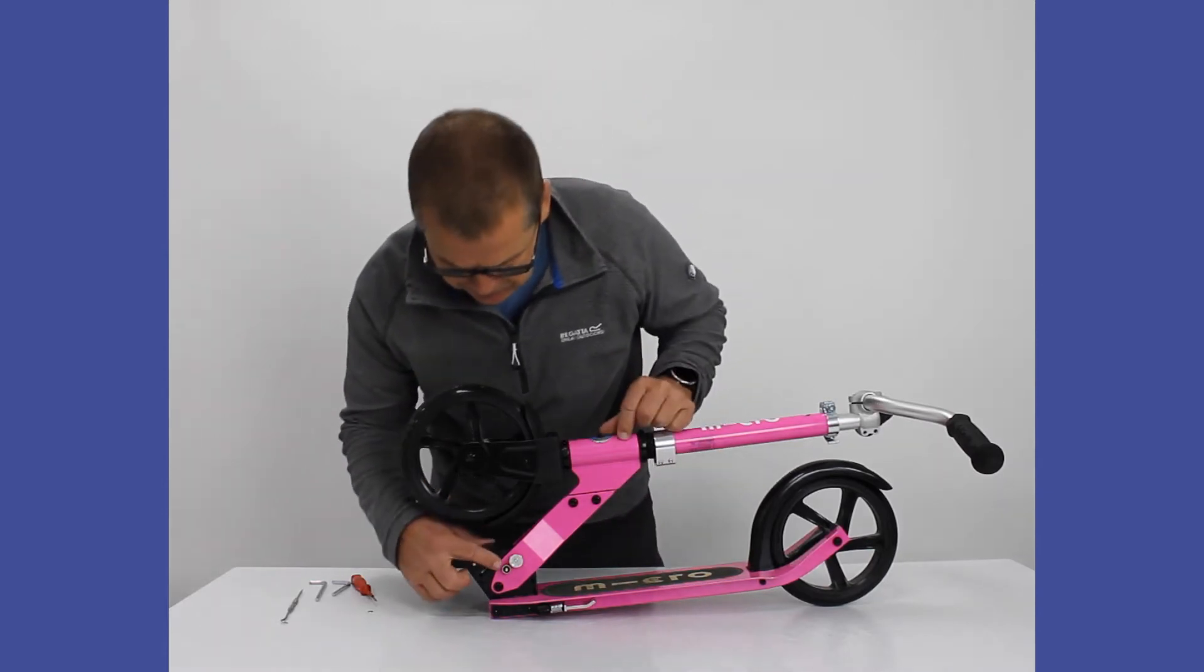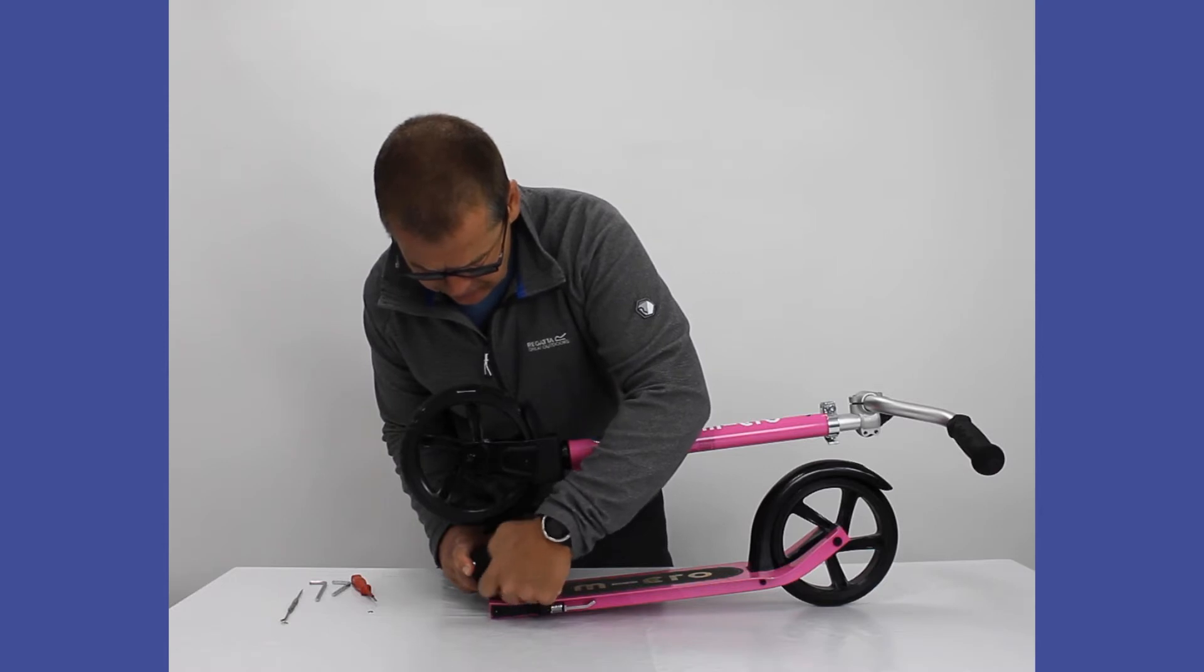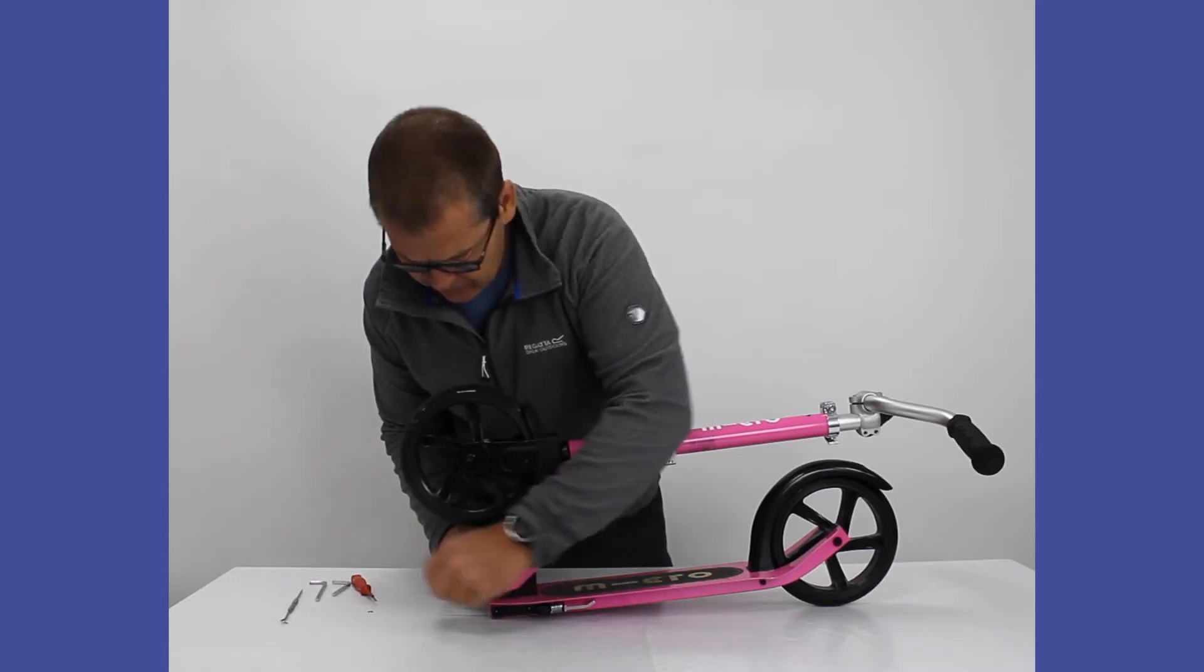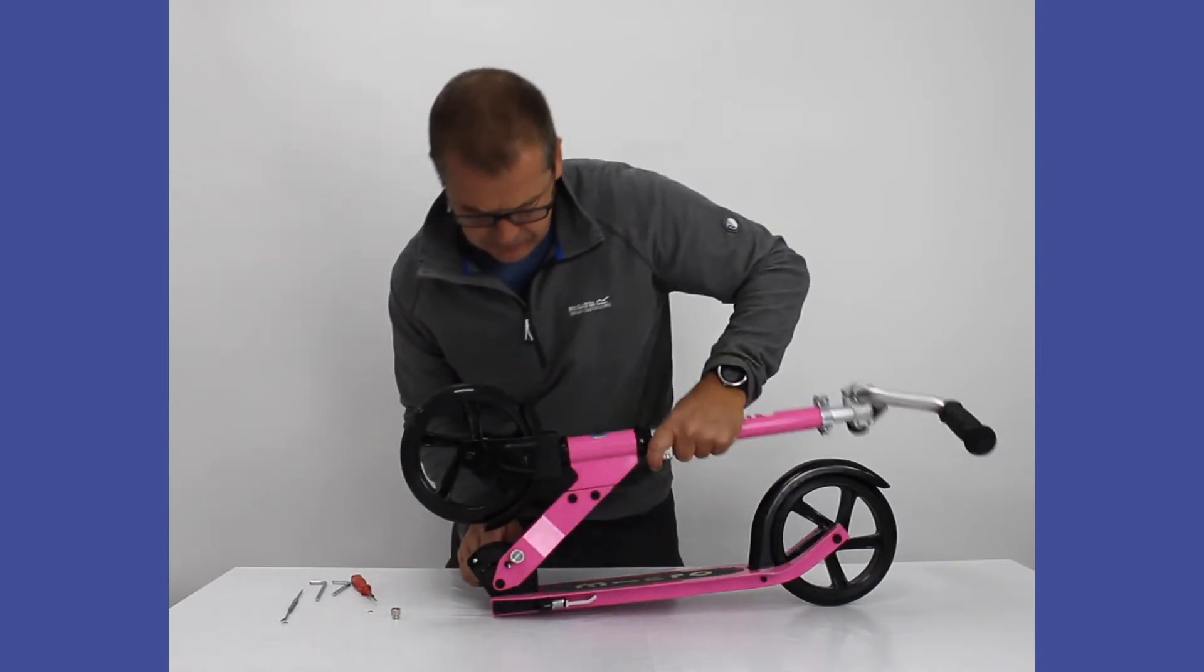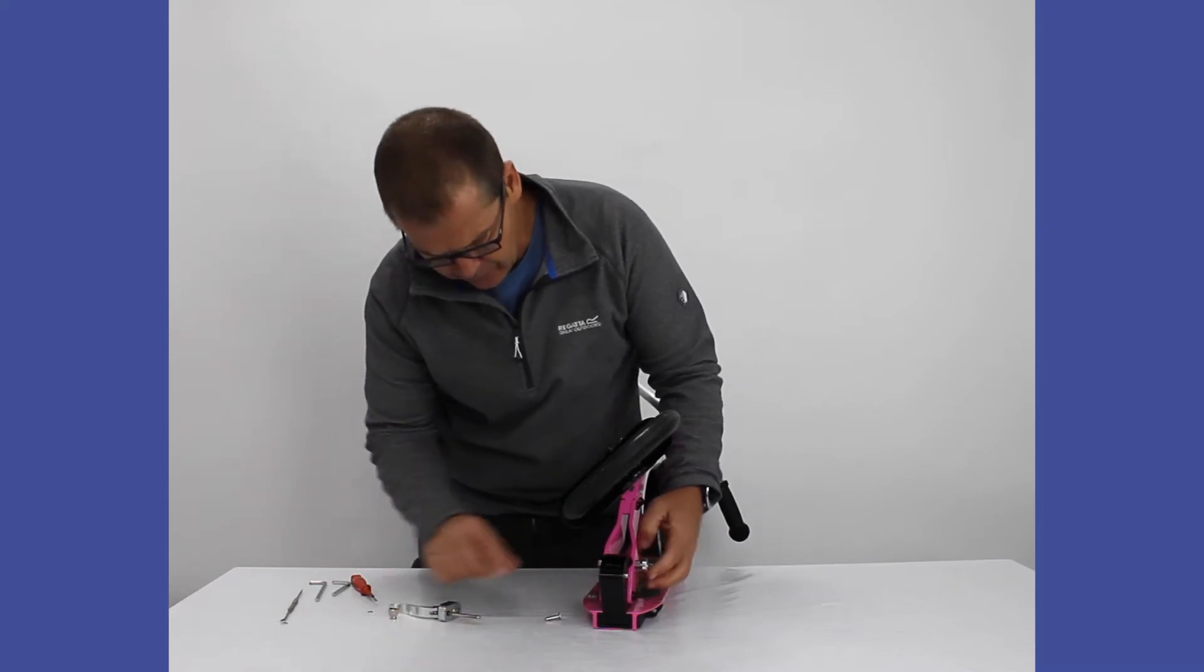Now we've removed the C-clip, we just need to undo this little knob nut here. So it's just normal anti-clockwise thread. And we just undo that and push it through, and then we pull it out from one side.